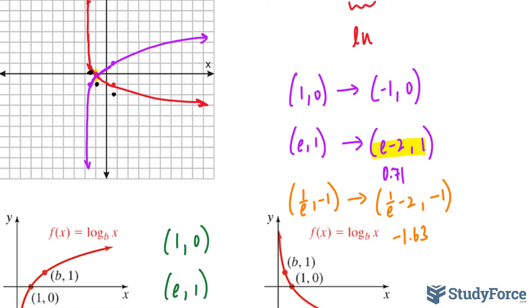Of course, you subtract 1 from the y-coordinate, and you can actually get the accurate point that it represents. In other words, that becomes minus 1 and minus 1. That becomes e minus 2 and 0, and you see that right here. And this point becomes 1 over e minus 2 and negative 2, and you see that right there.